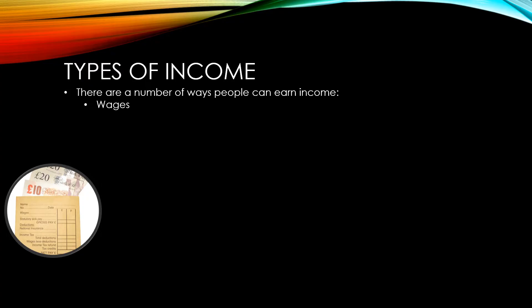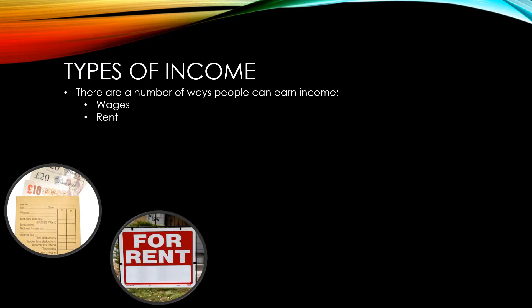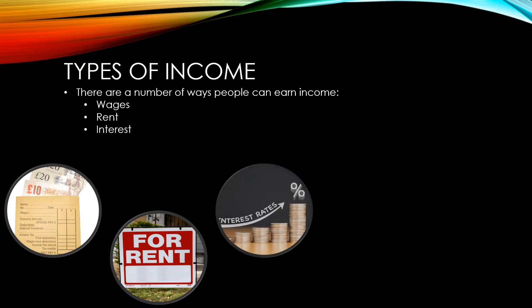Other households have assets that can earn them money. For instance, some households have more than one home and are able to rent out the other homes and earn an income from that rent. Some households will have savings which provide interest income, while other households will have no savings and so get no income from interest.